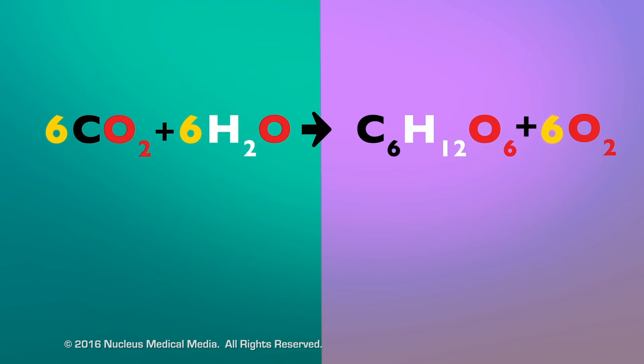The numbers in front of the formulas are called coefficients. They indicate the number of molecules of each reactant and product. If there's no coefficient, it's understood to mean one molecule of that substance.